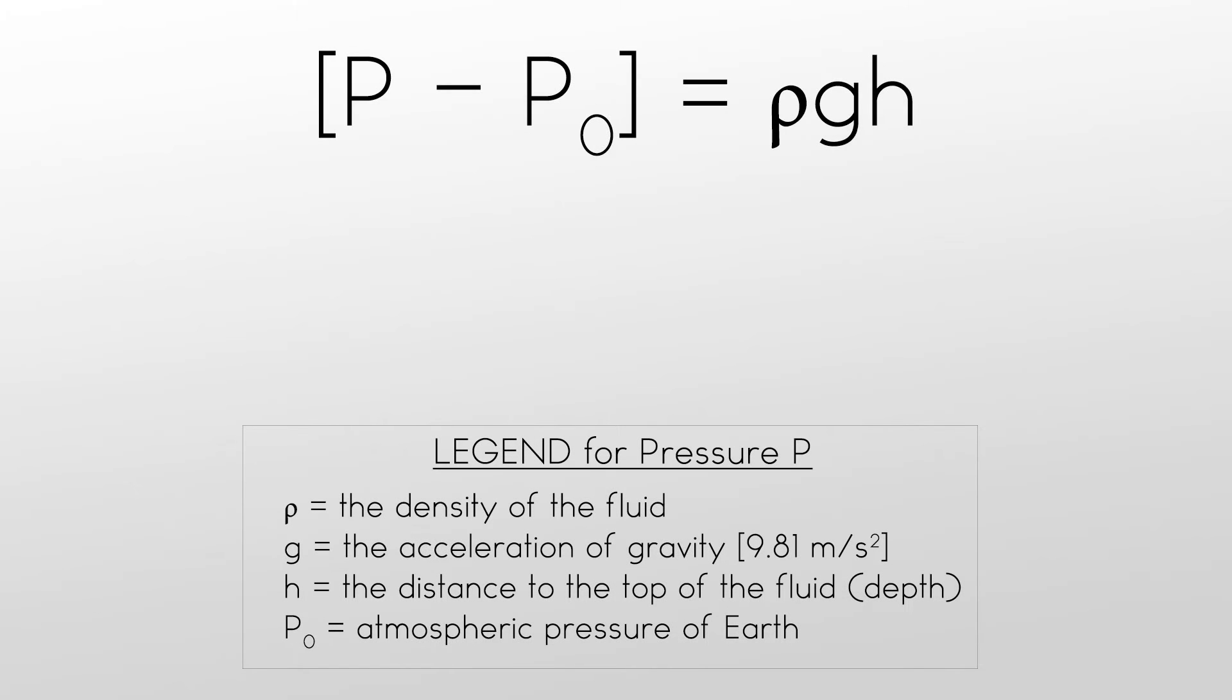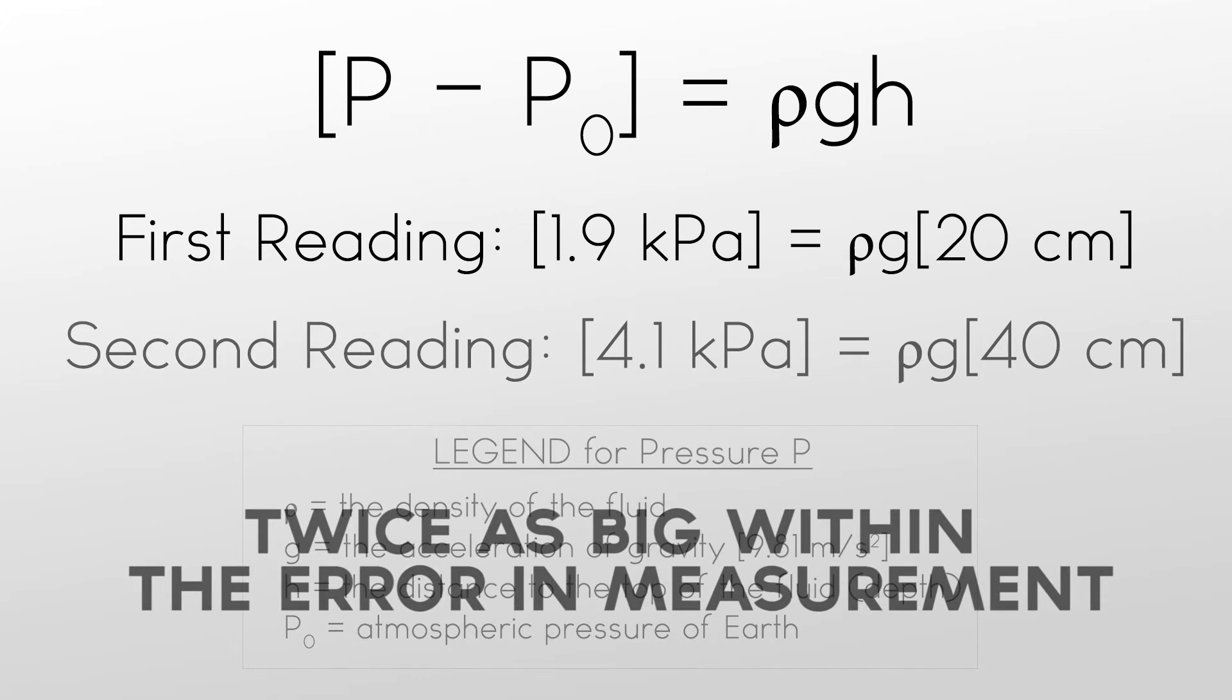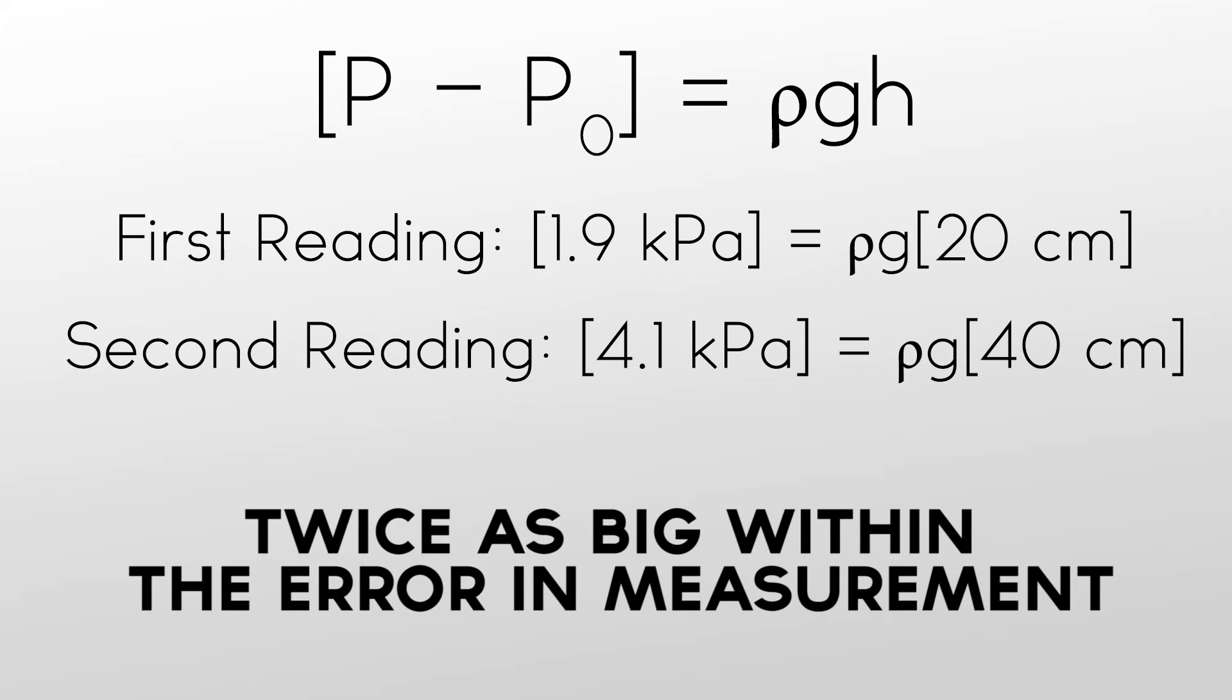If we rewrite our pressure equation so that the atmospheric pressure is subtracted from the pressure readings, hydrostatic equilibrium within the accuracy of our equipment is easier to see. Pressure minus atmospheric pressure equals rho times g times h. So at a depth of 20 centimeters, we are seeing a reading of 1.9 kilopascals over atmospheric pressure. And at a depth of 40 centimeters, we are seeing a reading of 4.1 kilopascals over atmospheric pressure.